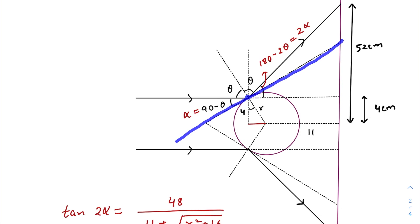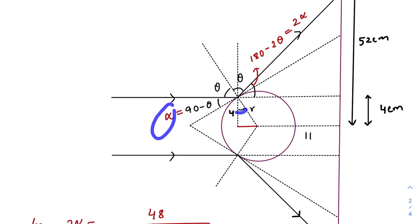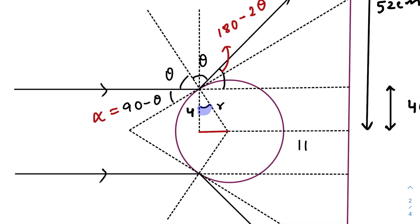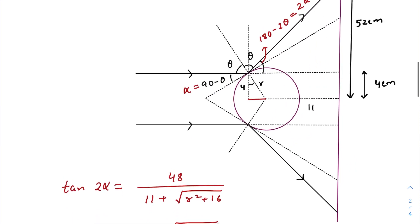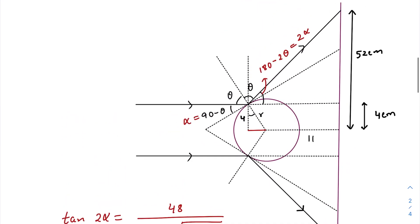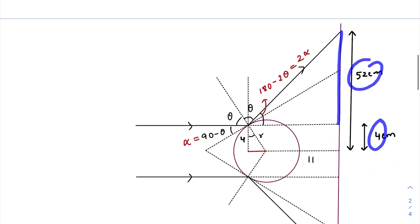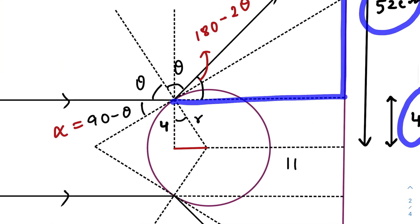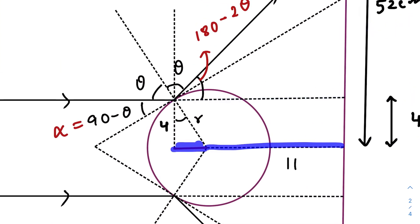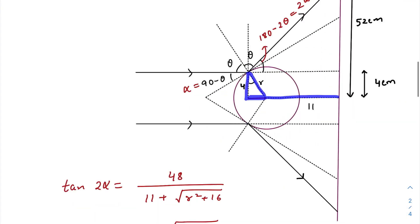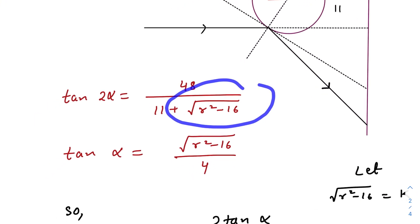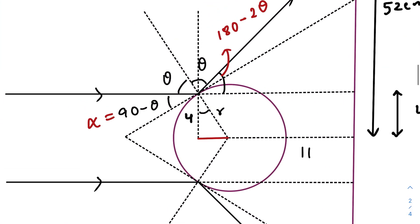The tangent on the sphere makes an angle of 90 minus theta, which I have considered as alpha, so this becomes 2 alpha. Using trigonometry, tan of 2 alpha equals this length divided by this length. The horizontal length is 52 minus 4, which is 48. The vertical length is 11 plus root of (r² minus 16). And from the smaller triangle, tan alpha equals root of (r² minus 16) divided by 4.